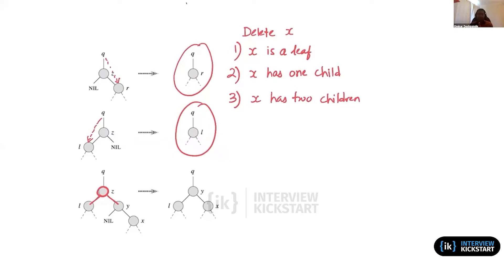Now we had to figure out a way to remove it so that the search property, the binary search property, is not violated. The search property in a binary search tree is that every node that is less than z should be in the left subtree of z, and every node that is bigger than z has to be in the right subtree of z.